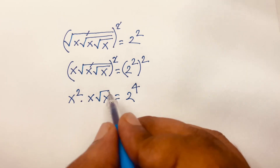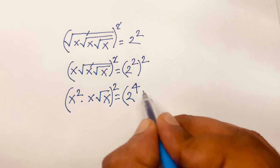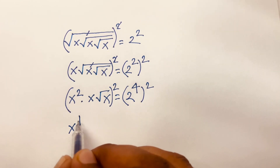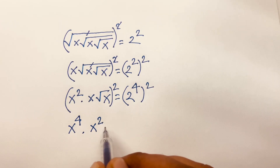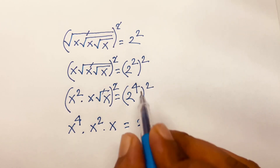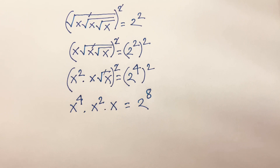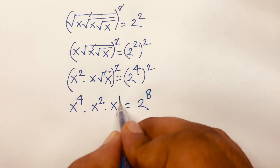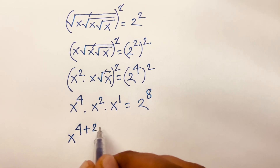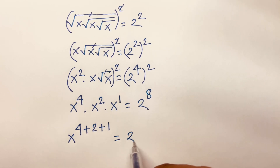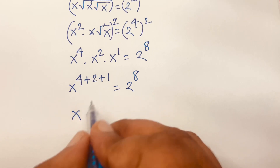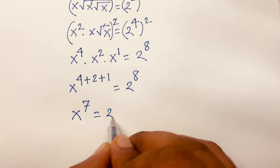Then again I square both sides. It will be x squared to the power 2, giving x to the power 4, times x squared, and the square root cancels, so x to the power 4 plus 2 plus 1 is equal to 2 to the power 8. Then x to the power 7 is equal to 2 to the power 8.